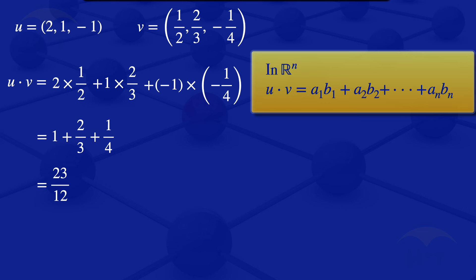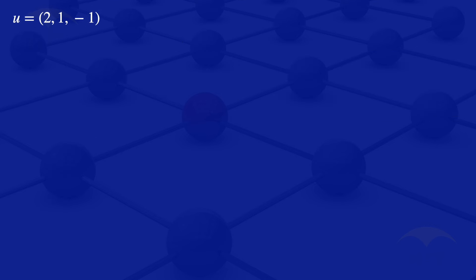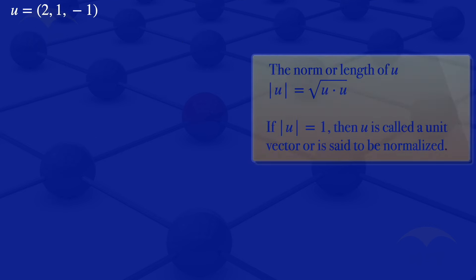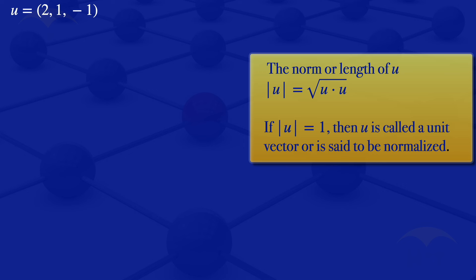Now moving on to the second question, where we want to normalize that vector u. The norm or length of a vector u is the square root of the inner product of that vector with itself. If the norm of a vector is 1, then the vector is called a unit vector or is said to be normalized.